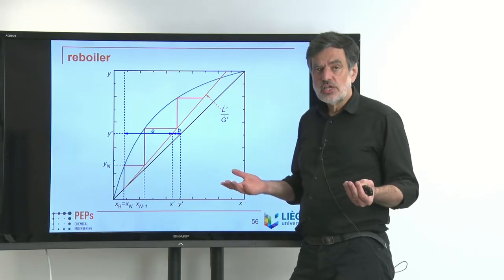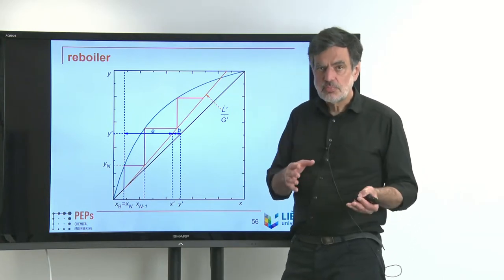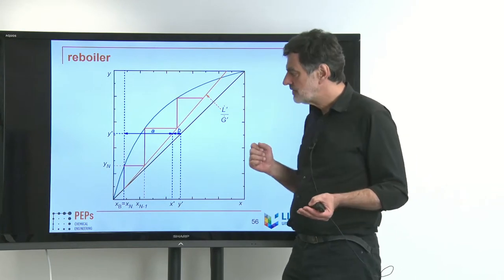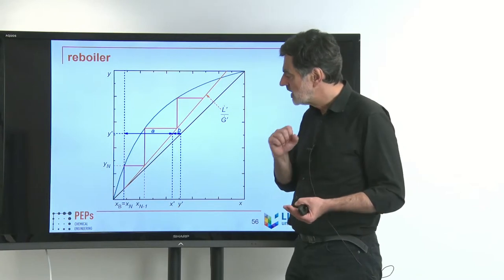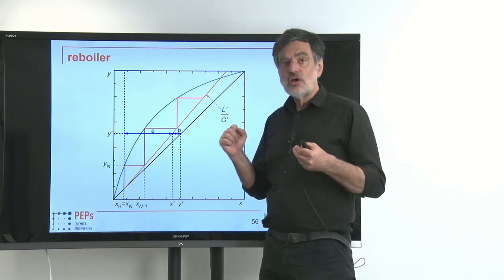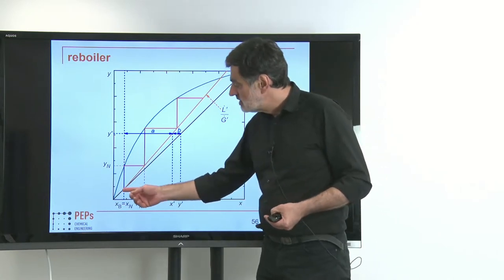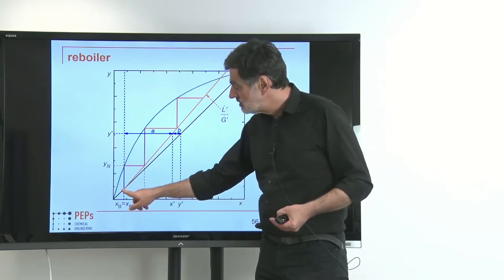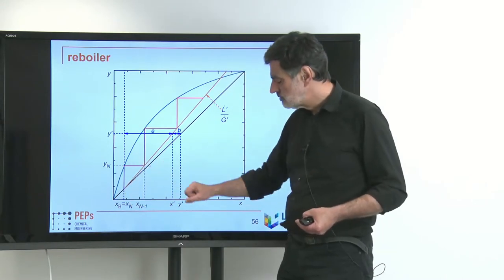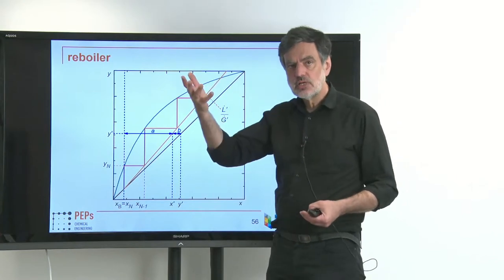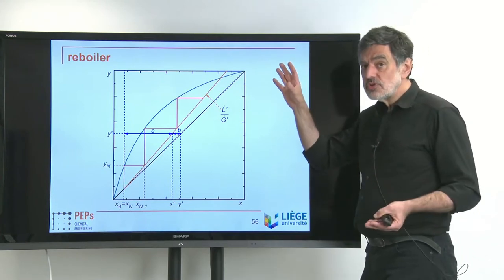This is the same situation as with a partial condenser: if it's a partial reboiler, we get one theoretical stage for free. We discussed that already when we discussed distillation in the McCabe-Thiele diagram. If we have total evaporation — a total reboiler — we do not get that stage for free; then the reboiler is just a point and that is already the first theoretical stage that must be realized in the distillation column. So the situation is symmetric for the condenser and reboiler.